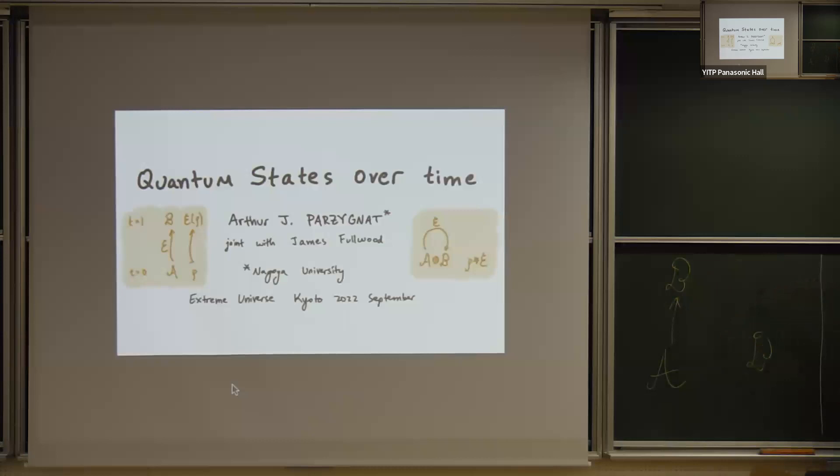then postulate 4 accounts for how we should describe that system. But what if A and B are time-like separated, and there's an evolution going from A to B? Is there a mathematical construct that we can describe on the algebra tensor product, the one in the future? So that's the context of my talk, and that's what I'm going to refer to as a quantum state over time.